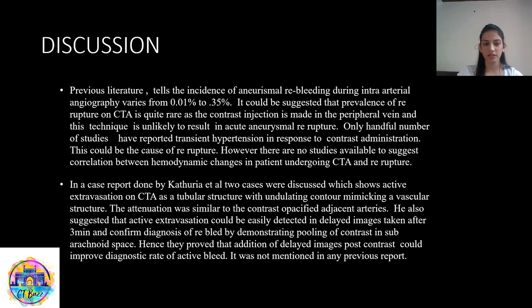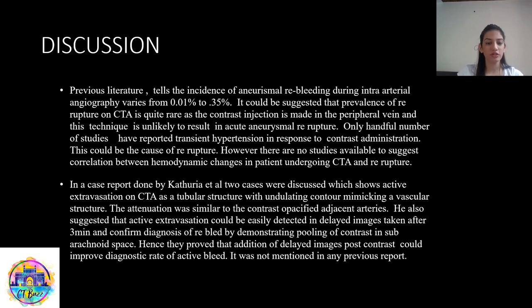Coming to the discussion, previous literature tells us the incidence of aneurysmal re-bleeding during intra-arterial angiography varies from 0.01% to 0.35%. It could be suggested that prevalence of re-rupture on CT angiography is quite rare as the contrast injection is made in the peripheral vein, and this technique is unlikely to result in acute aneurysmal re-rupture. Only a handful number of studies have reported transient hypertension in response to contrast administration, which could be because of re-rupture. However, there are no studies available to suggest correlation between hemodynamic changes in patients undergoing CT angiography and re-rupture.